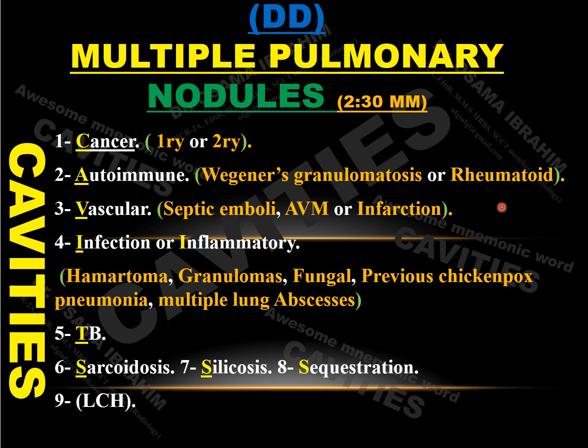For the differential diagnosis of multiple pulmonary nodules from more than two millimeters up to three centimeters — because if more than three centimeters we consider it a lung mass — we remember it with the word CAVITIES. C is for cancer, whether primary or secondary. A is for autoimmune, like Wegener's granulomatosis or rheumatoid arthritis. V is for vascular: septic emboli, arteriovenous malformations, or infarctions. I is for infections or inflammations.